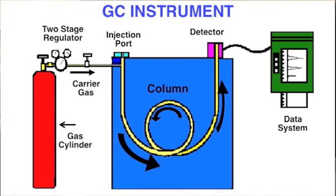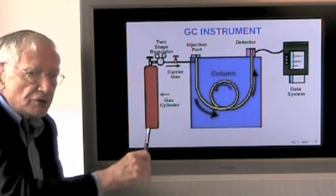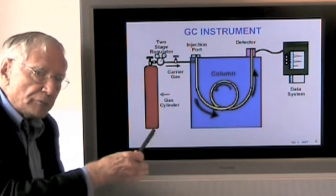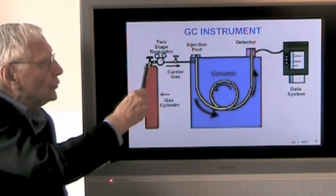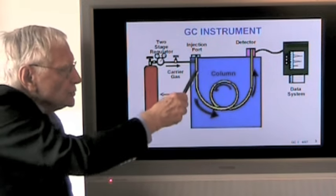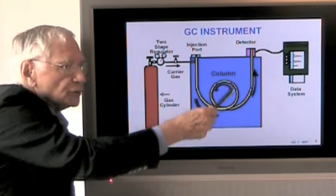The GC instrument responsible for the separation consists of several components. A gas cylinder here, let's say of helium, a two-stage regulator, where the first stage shows you the gas pressure left inside the cylinder. The second stage is set by you, the operator, to sometimes 40 or 60 PSI. This pressure then drives the carrier gas through an injection port, a column, and on to the detector.